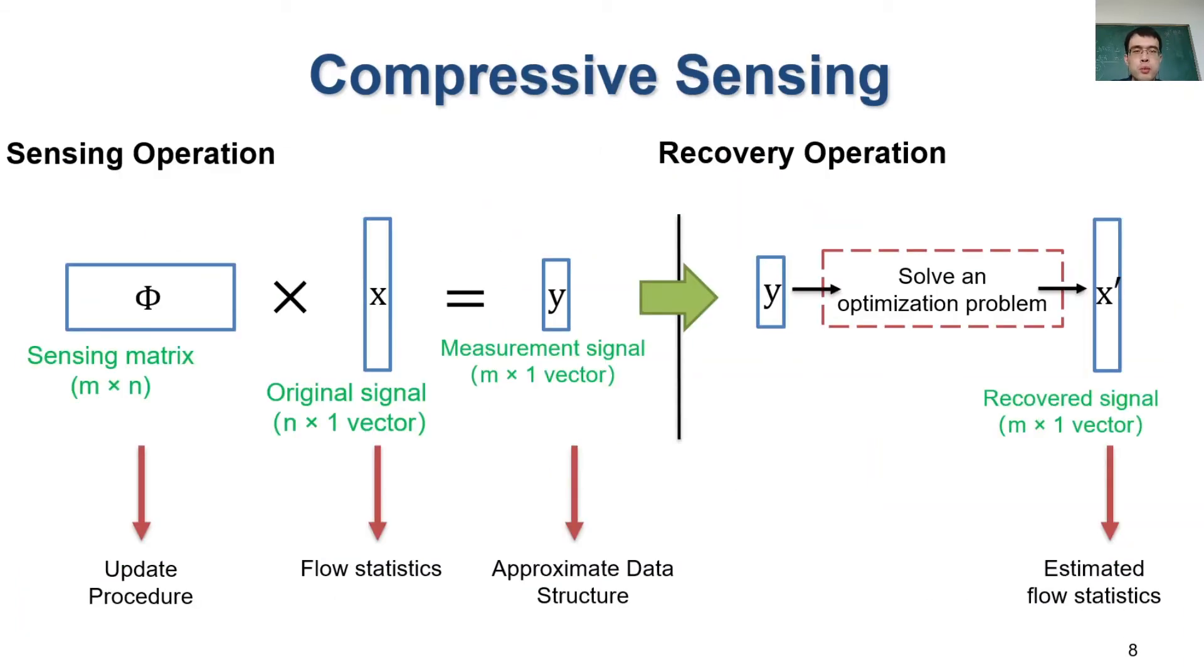We first introduce compressive sensing in the context of network monitoring. Compressive sensing considers signals as vectors, and it has two basic operations to deal with the vectors. The first is called sensing operation. It's similar to the update phase in network monitoring. The sensing operation employs a sensing matrix to map an original signal X into a measurement vector Y. And the second operation, recovery operation, is similar to the query phase in network monitoring. Its goal is to recover the original X from Y based on some prior knowledge.